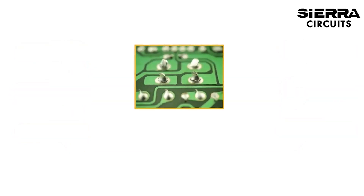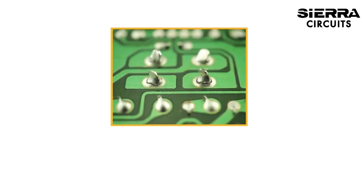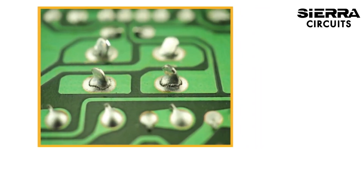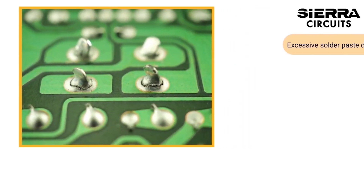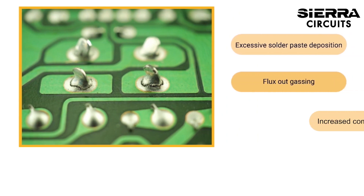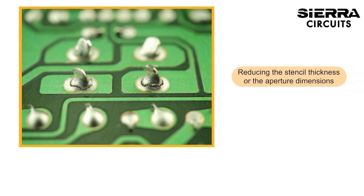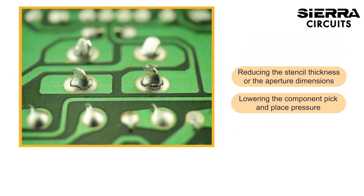Solder beading is the formation of bigger solder balls near discrete components placed closely. Excessive solder paste deposition, flux outgassing, and increased component density can lead to solder beading. You can avoid this by reducing the stencil thickness or aperture dimension and lowering the component pick and place pressure.